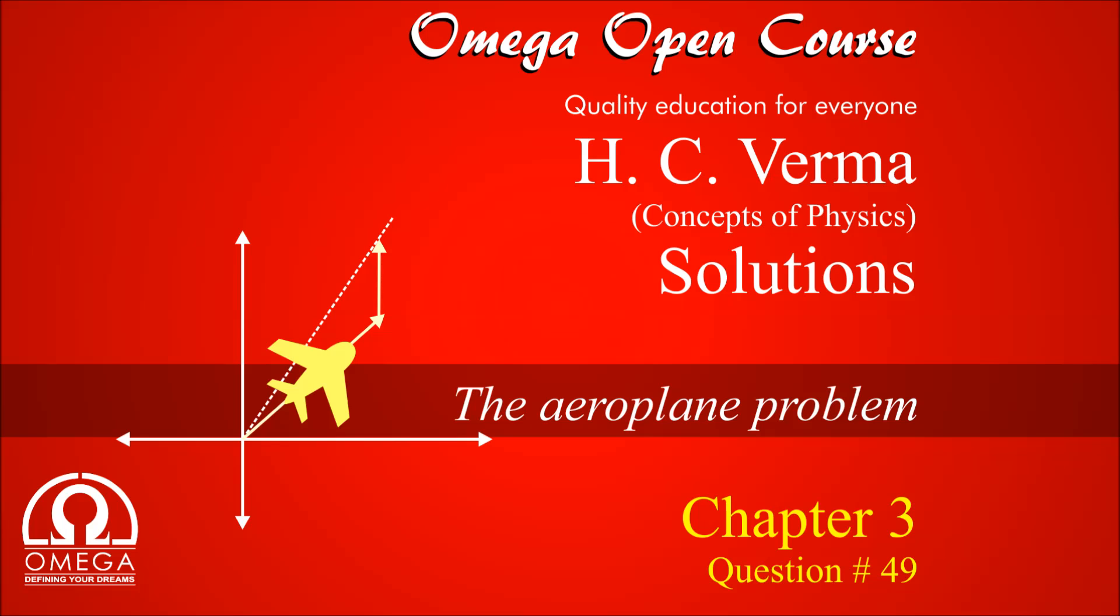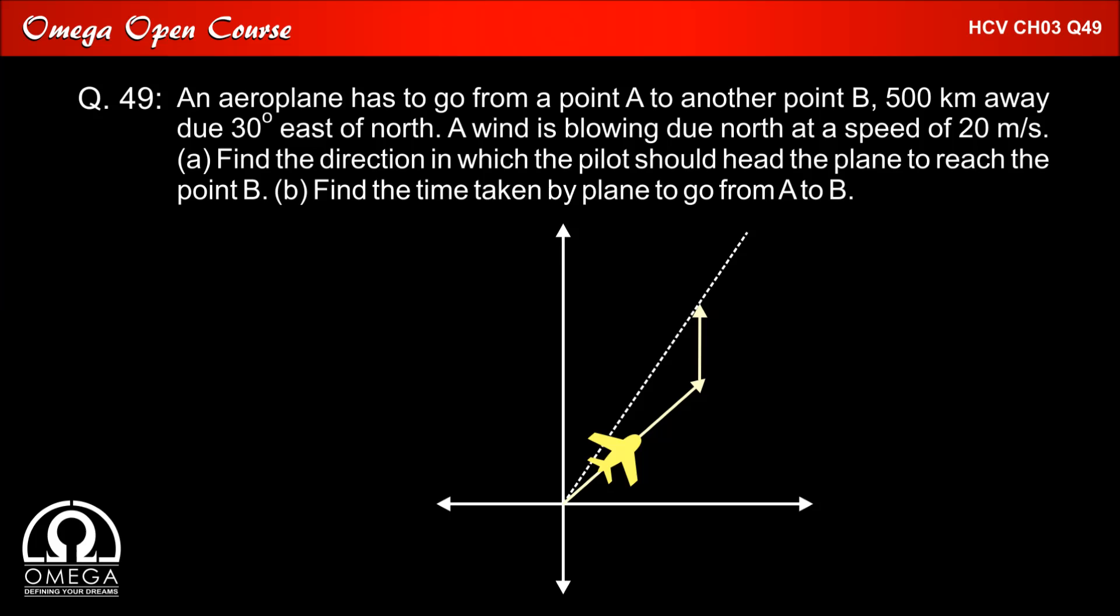Let's see H.C. Verma Chapter 3, question number 49, the airplane problem. An airplane has to go from point A to another point B, 500 km away, 30° east of north. Wind is blowing due north at a speed of 20 meters per second.